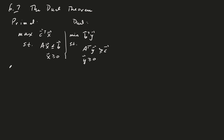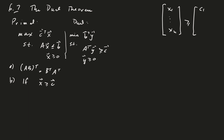Before we get started, here are a couple of computational things. Part A: if you take a transpose of a product, we take the transposes in reverse order. Part B: if you have two vectors where X is greater than or equal to C — meaning X1 ≥ C1, X2 ≥ C2, and so on through Xn ≥ Cn —